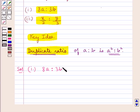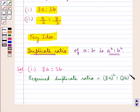Thus, the required duplicate ratio is equal to 8a whole square is to 3b whole square. That is, 64a square is to 9b square.